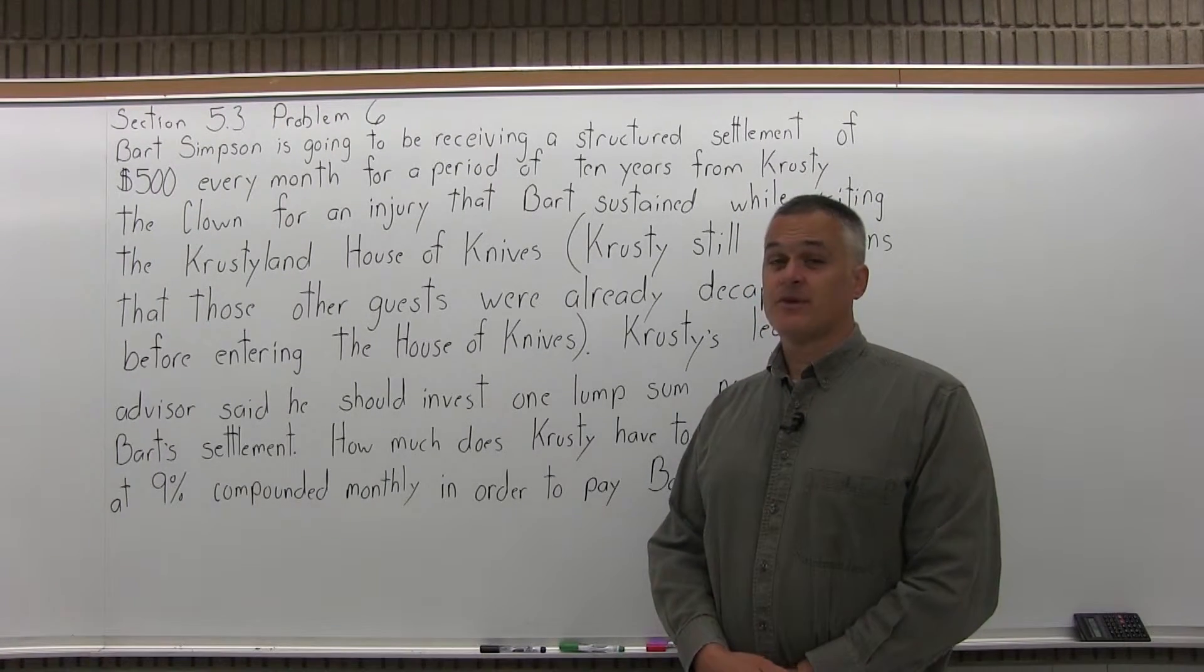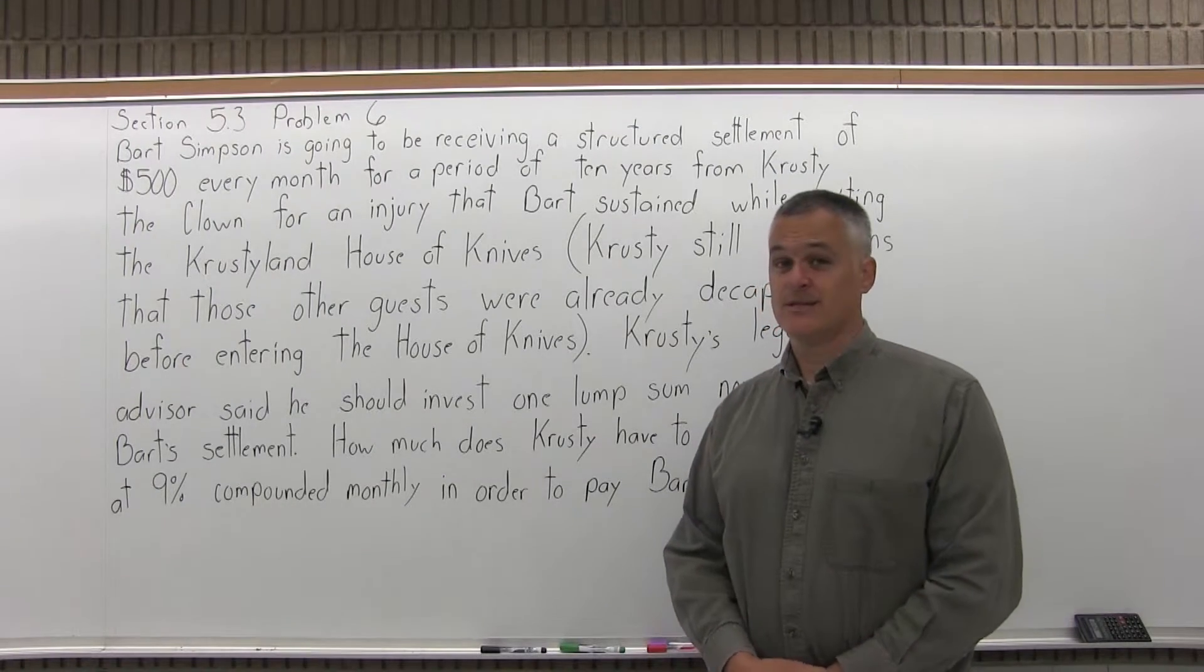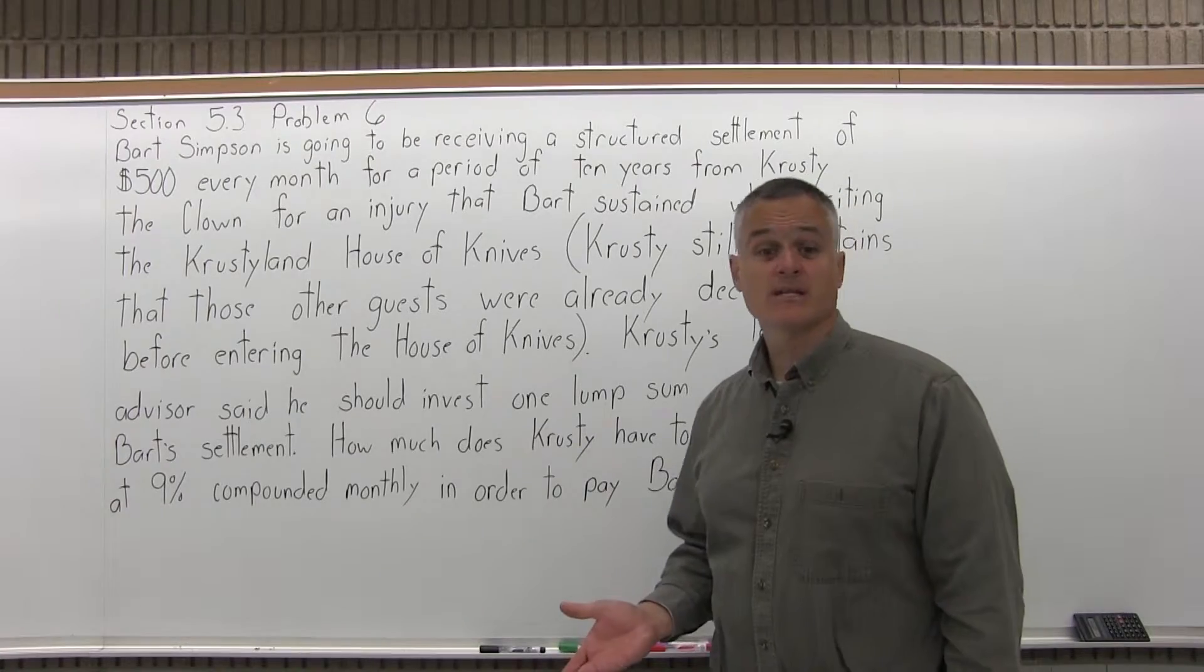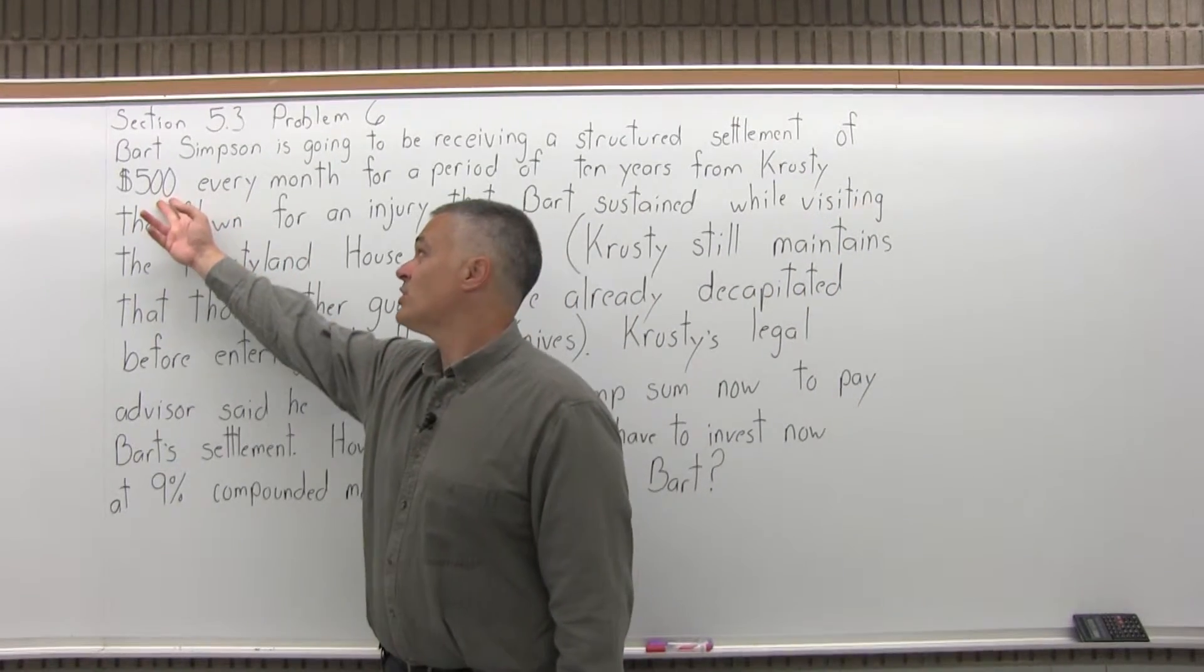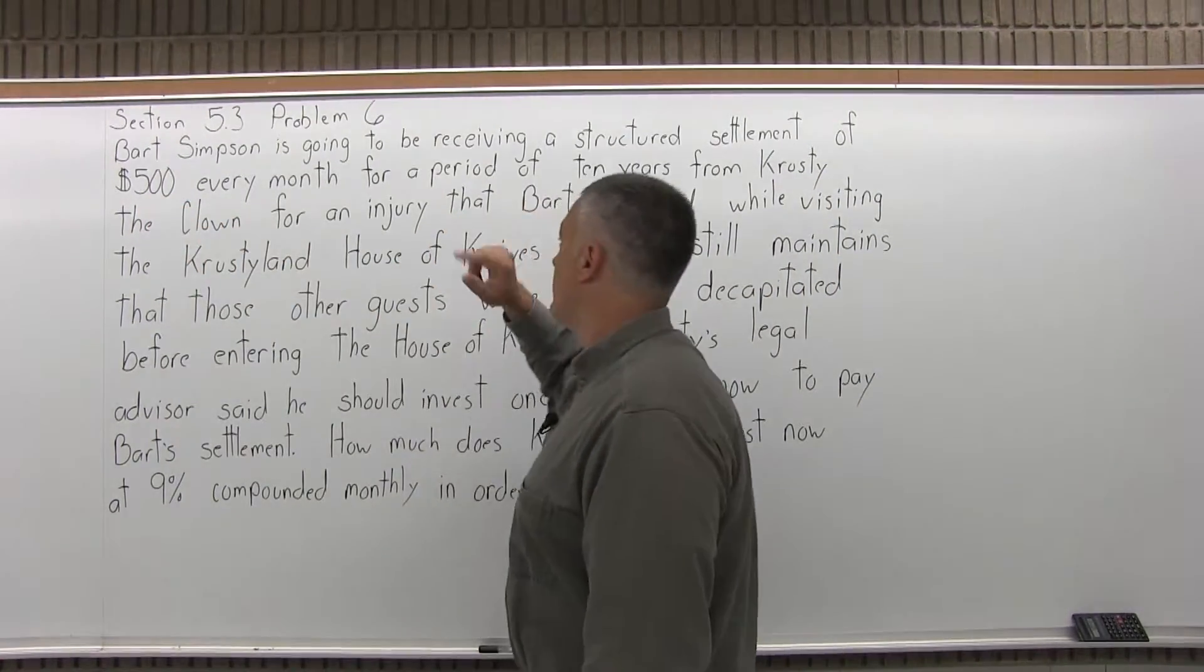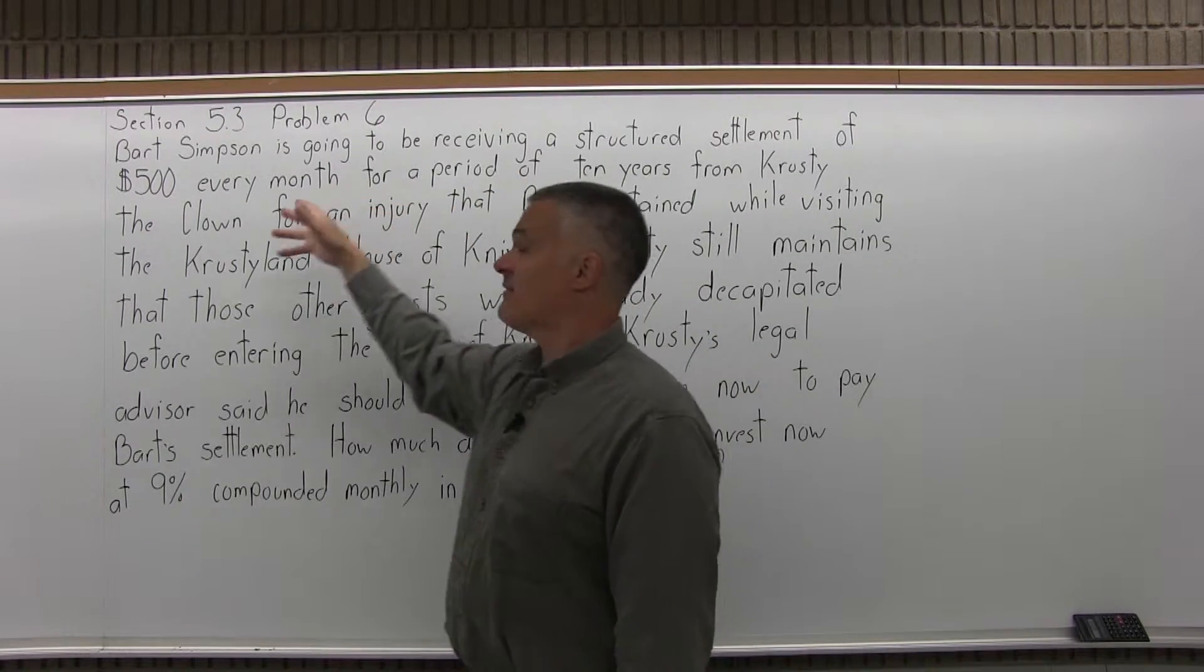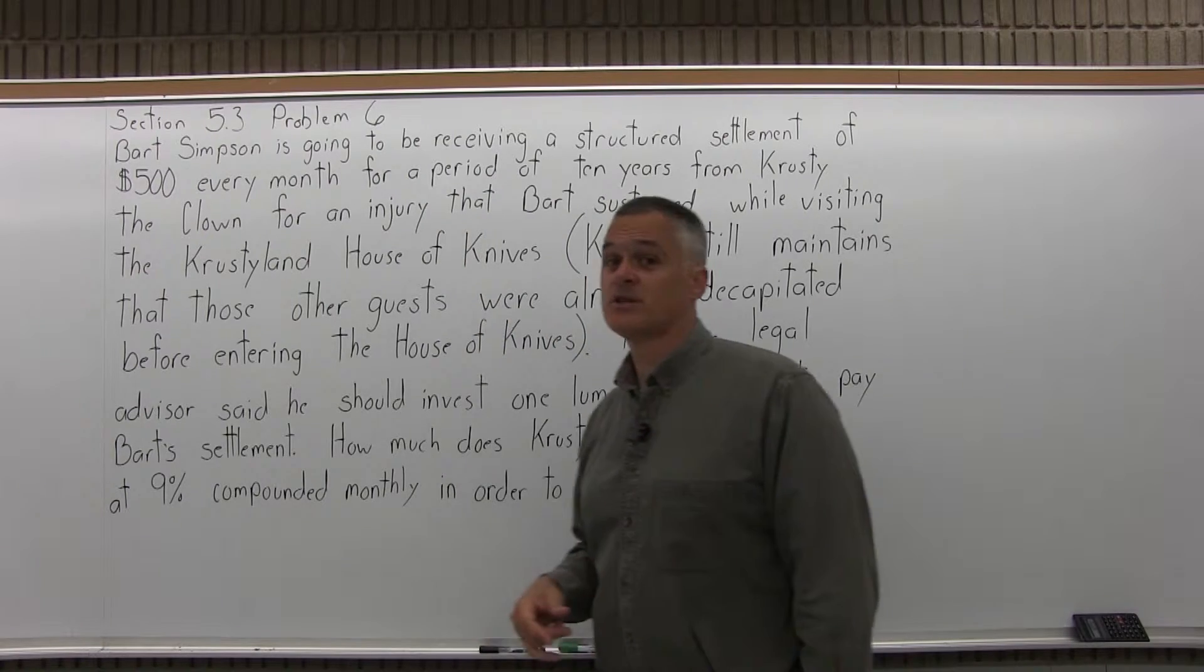So the first thing you have to figure out is what type of question is this? This is present value of an annuity. We're going to essentially be paying a salary. So Bart's going to be getting $500 every month for 10 years. So Krusty's going to pay him 120 payments of $500. That's $60,000 Bart's going to receive.